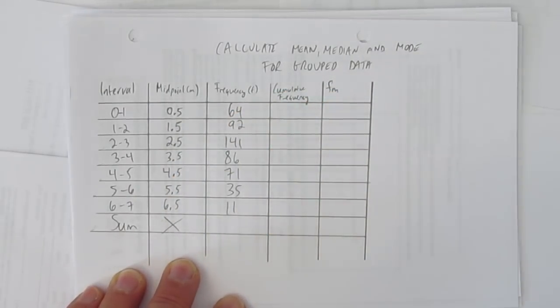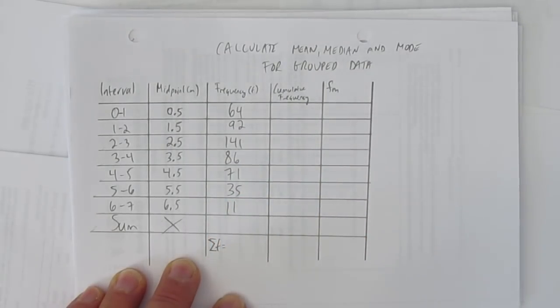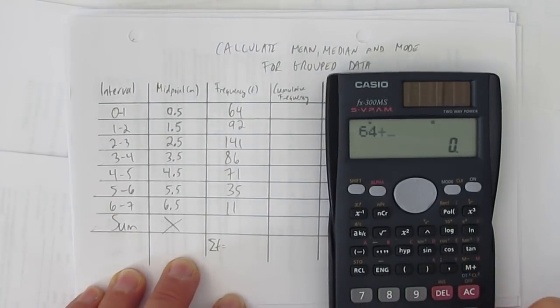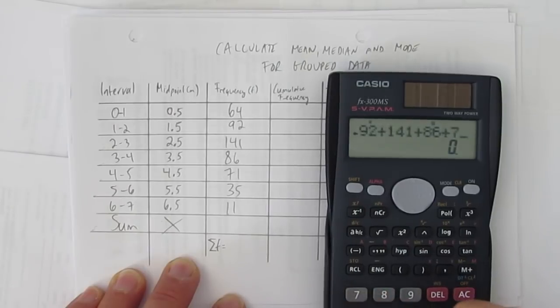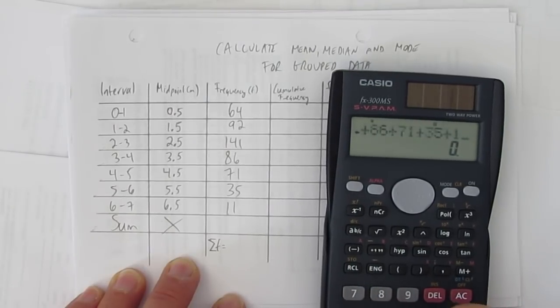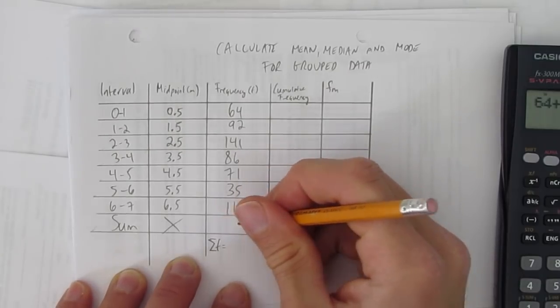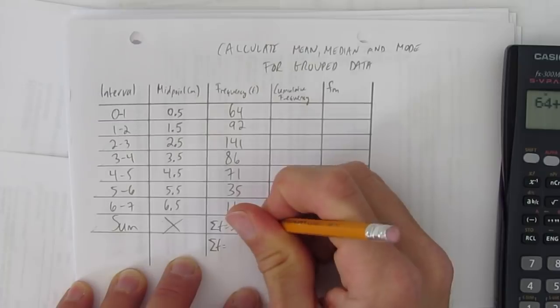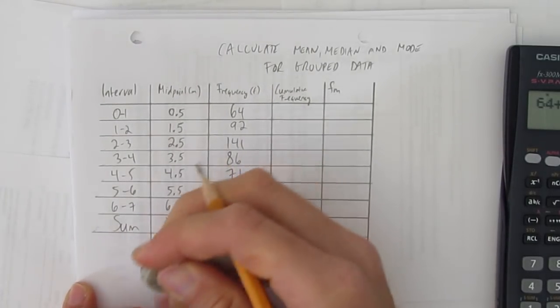We do want to sum the frequency though. Let's put a little sum of the frequencies here. And let's take out our trusty calculator. 64, plus 92, plus 141, plus 86, plus 71, plus 35, plus 11. And you get 500. I guess I could have written it here. Sum of f equals 500.